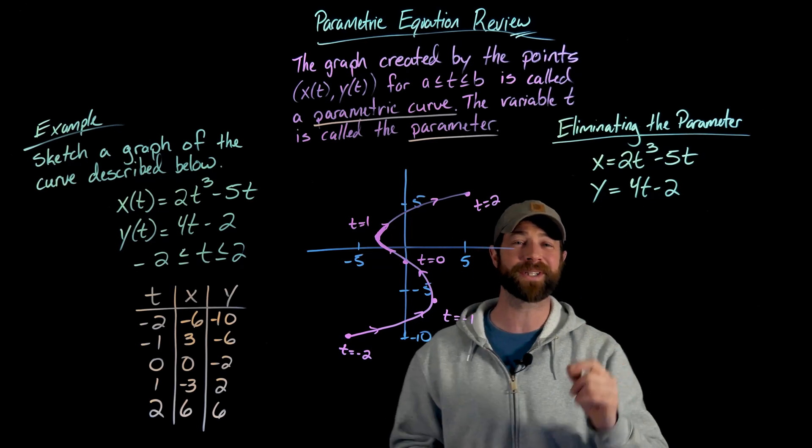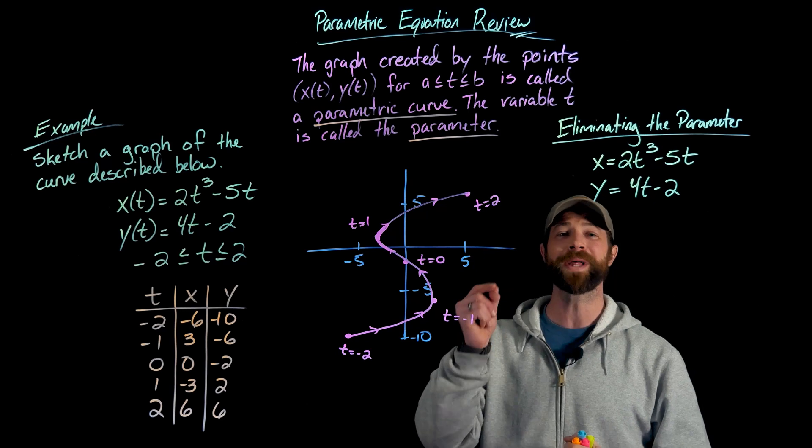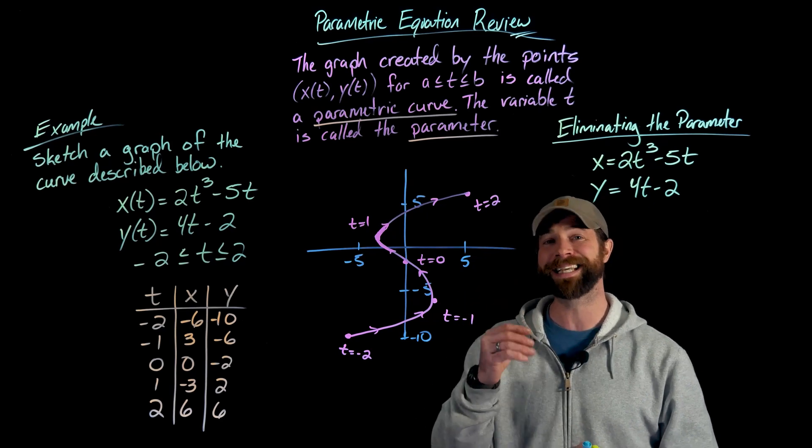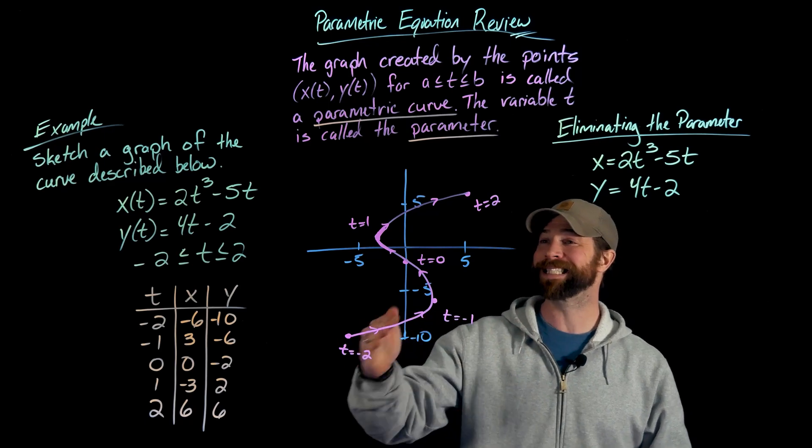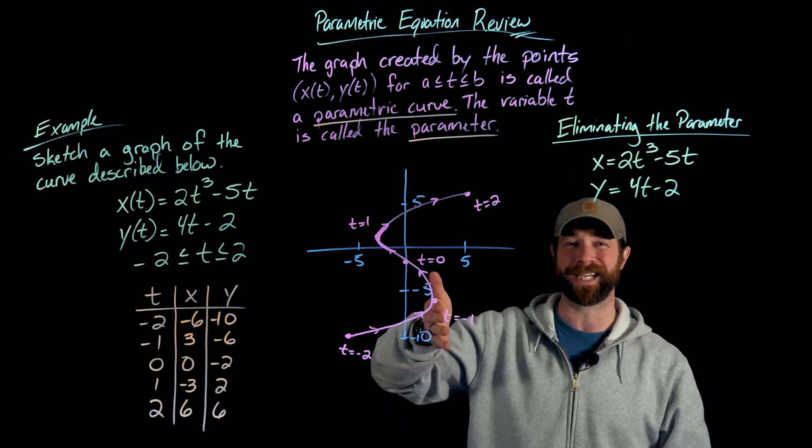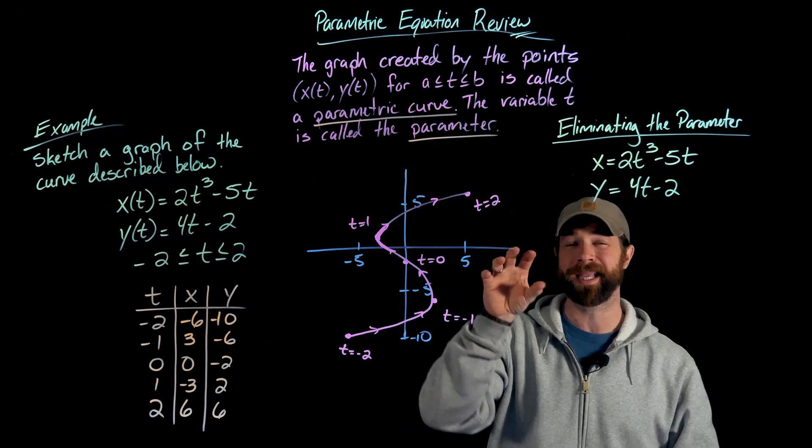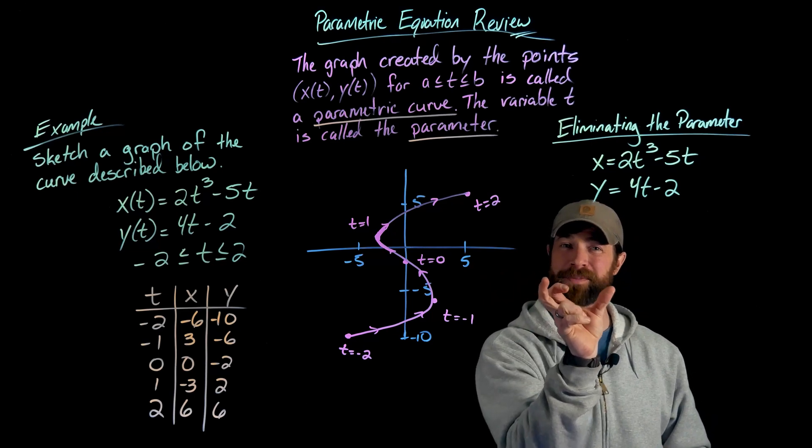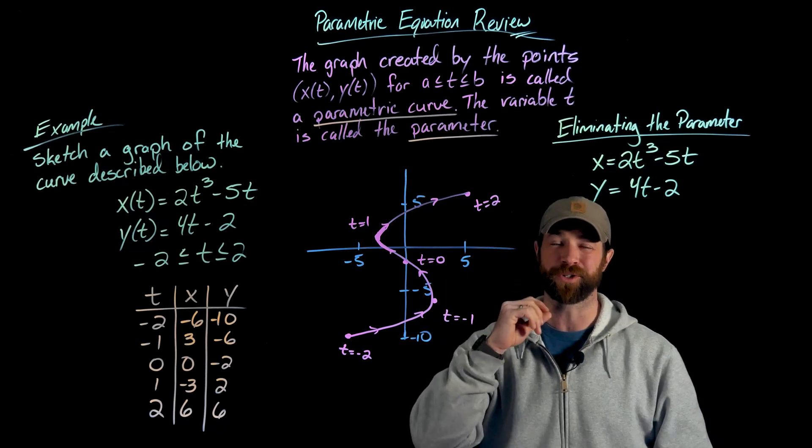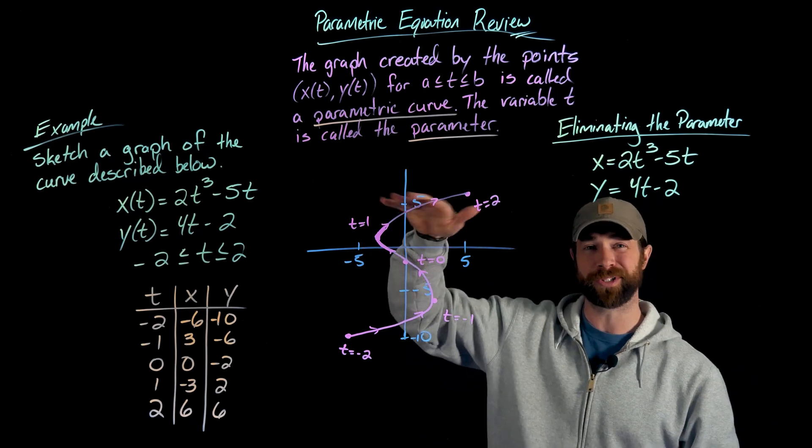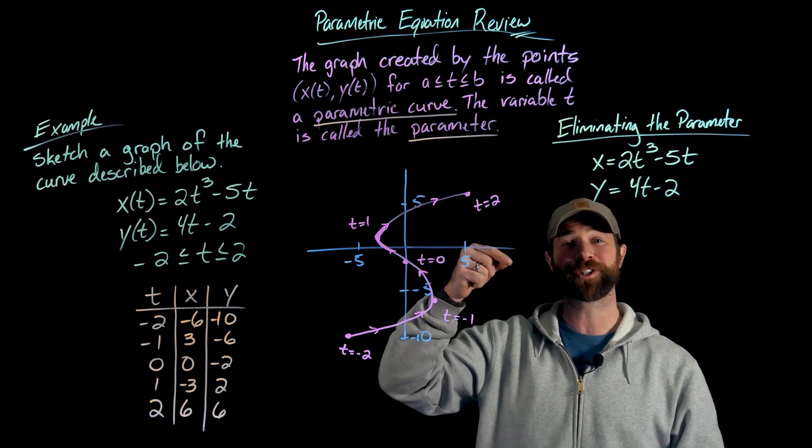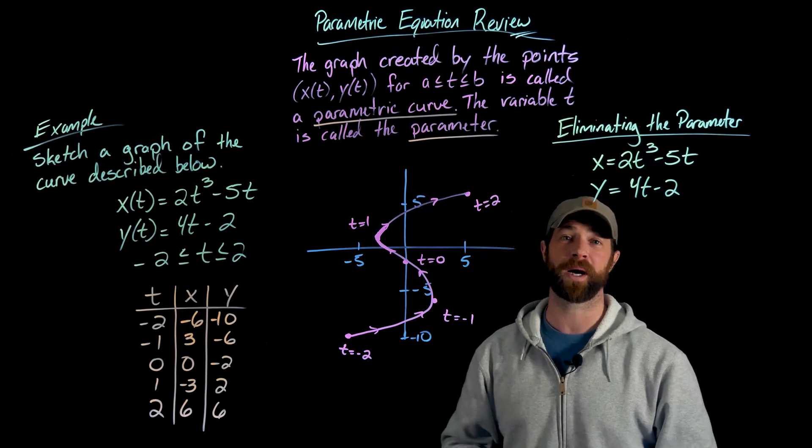If I was gonna get y equals some nice function in terms of x, this would have to pass the vertical line test. But actually if I look at it from the other direction, it passes a horizontal line test, which means this can be a function of x in terms of y.